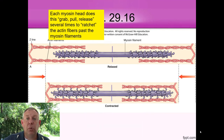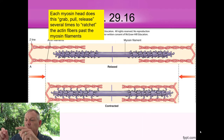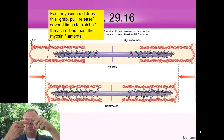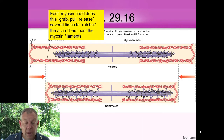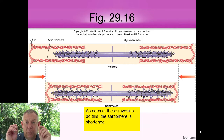We call this the grab-pull-release model. Each myosin head grabs, pulls, and releases like a ratchet, pulling the myosin past the actin very rapidly. Each of the myosins does this and the sarcomere is shortened. A whole bunch of little pulls combined together is one big pull. That's how you shorten that sarcomere and shorten the muscle — that's a muscle contraction.